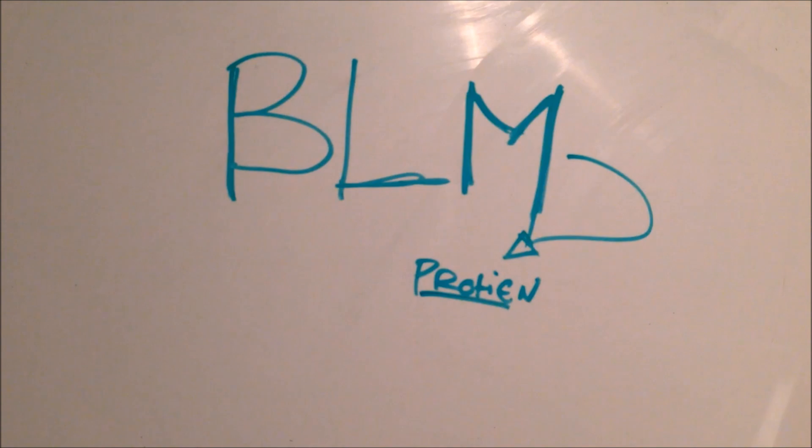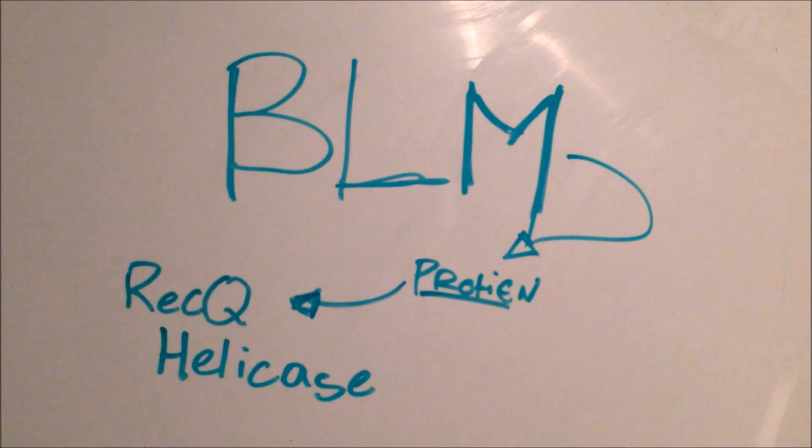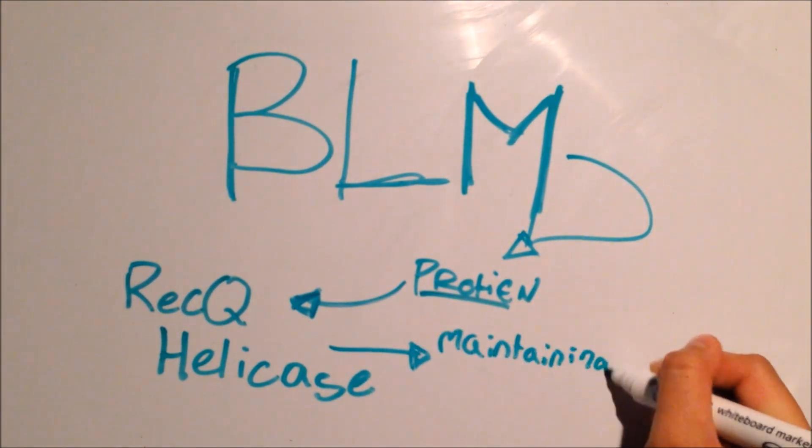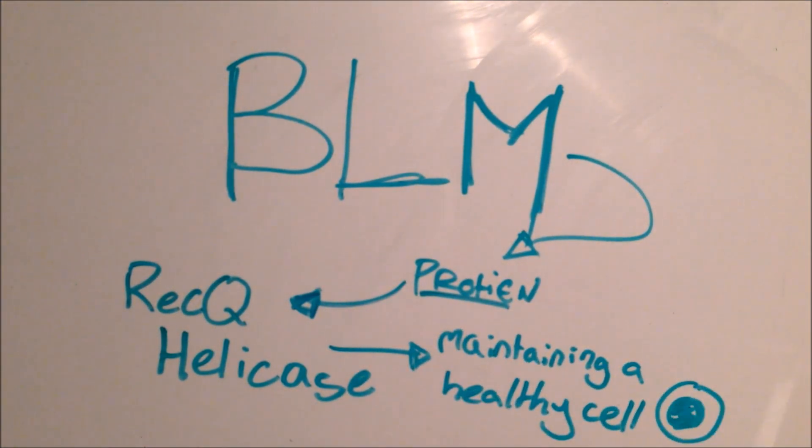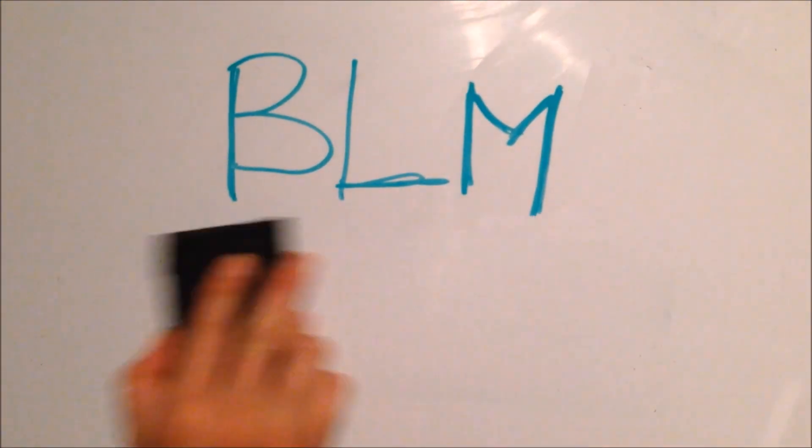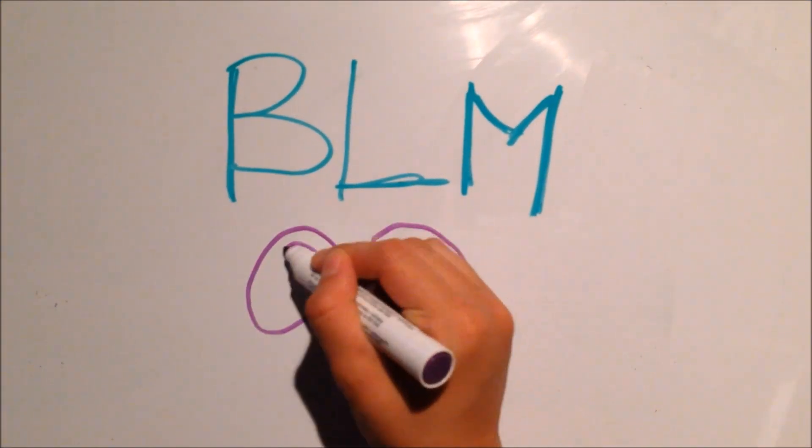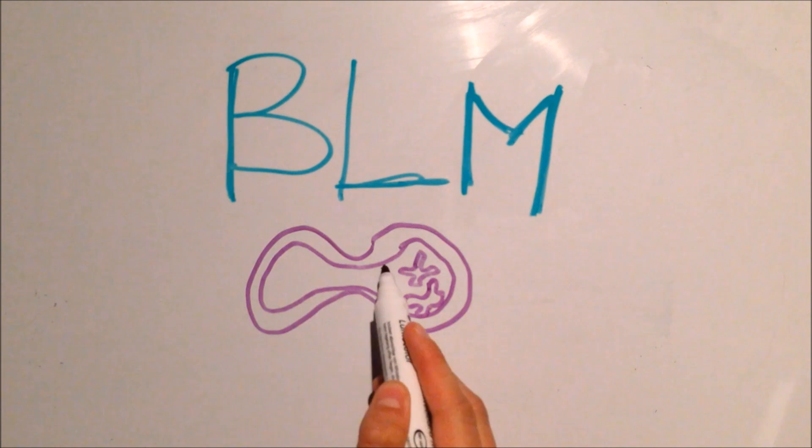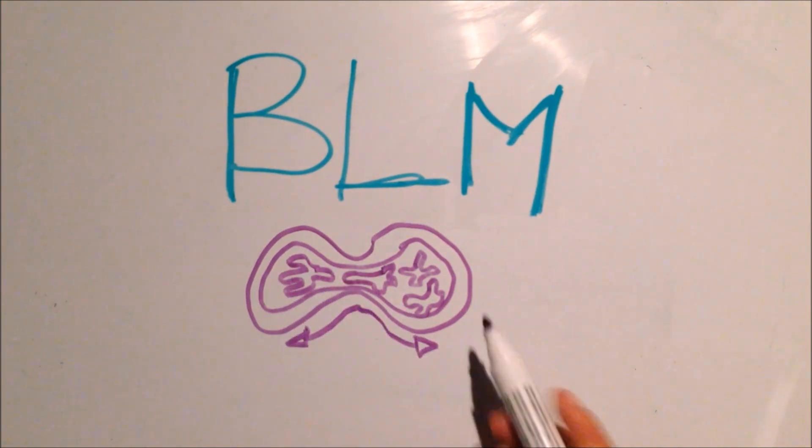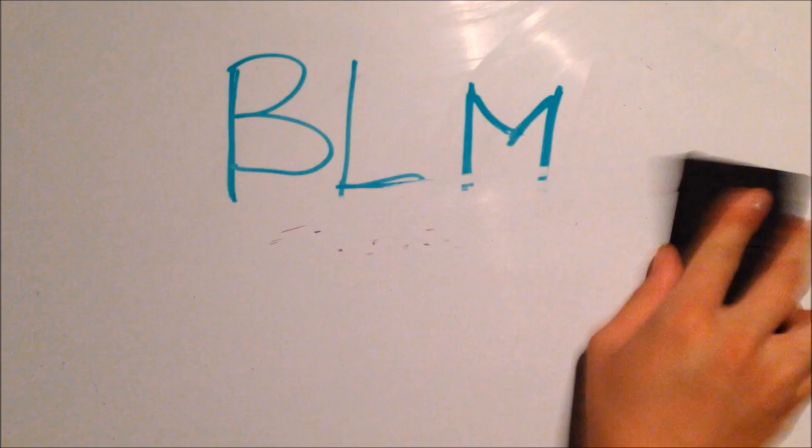BLM gene is responsible for the production of a protein from the RecQ helicase family, which is responsible for maintaining a healthy cell structure and duplication. Helicases are enzymes that bind DNA together, but can also split double helix strands of DNA in half so they can duplicate and produce other cells.